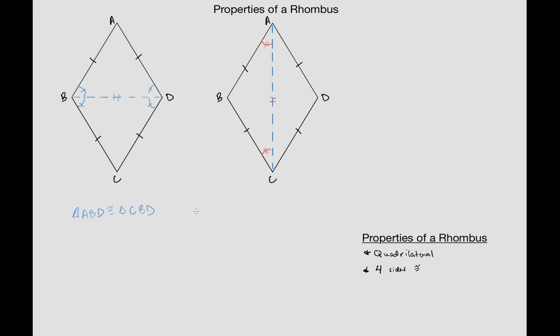So all of these angles are congruent. So in this case, triangle ABC is congruent to triangle ADC, and both of these were because of the side-side-side triangle congruence postulate.